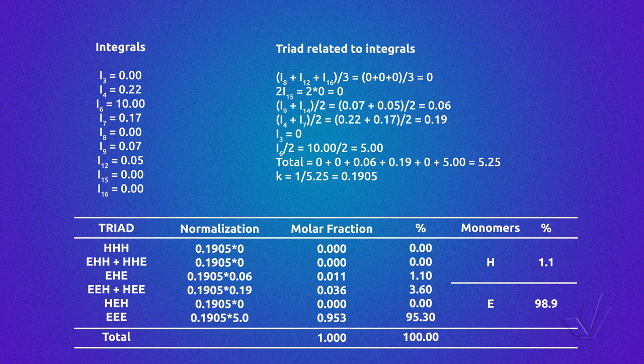It is also possible to obtain the average sequence length and the reactivity ratios, using the equation described in part 7 of this course. I want to show you another example: copolymers with long branches. The ethylene–alpha-olefin copolymers with an alpha-olefin from propylene to 1-hexene, with branching from methyl to butyl, have all different carbon-13 NMR spectra. However, ethylene copolymers with higher branches have very similar spectra, because carbon-13 NMR does not distinguish the chemical environment of a carbon further than the delta carbon from it. So, let's see how we can treat this case with the example of an ethylene-1-octadecene copolymer.